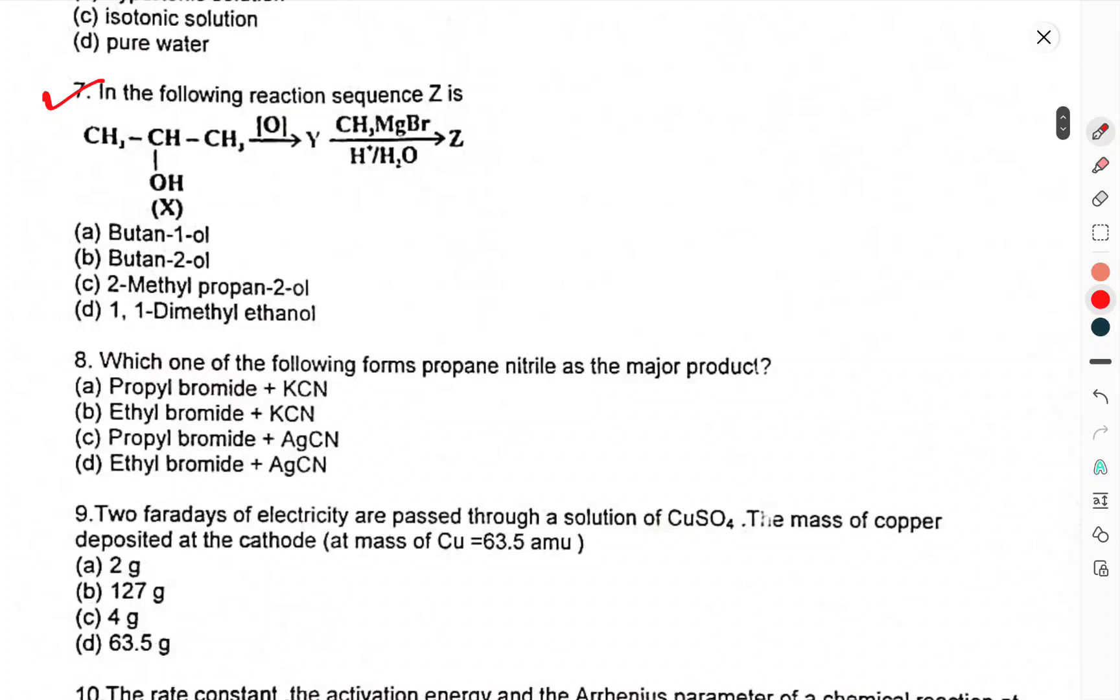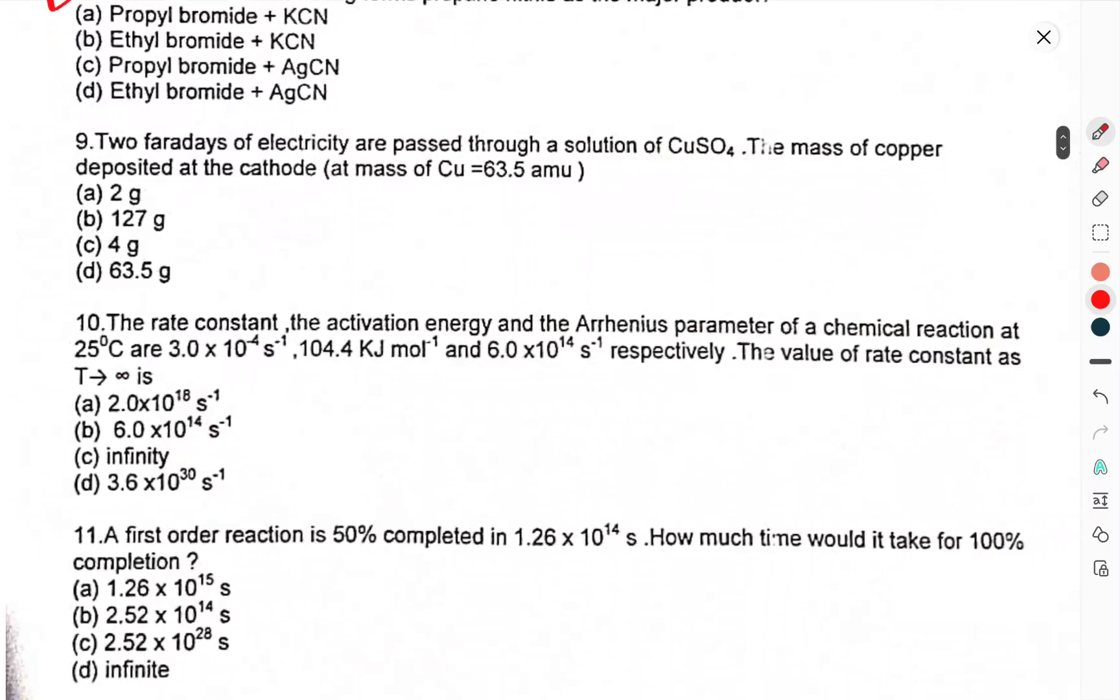A plant cell shrinks when it is kept in... Question 7: In the following reaction sequence Z is. Question 8: Which one of the following forms propane nitrile as a major product? Question 9.